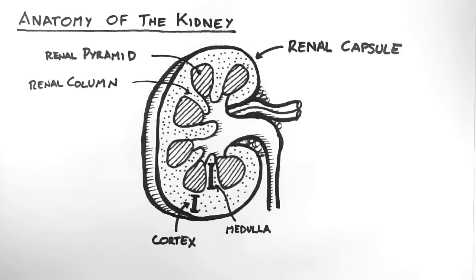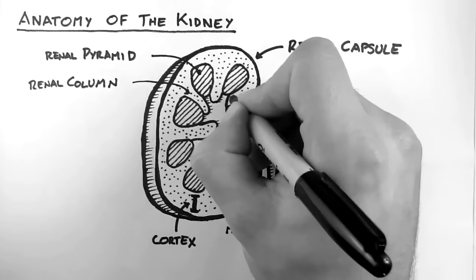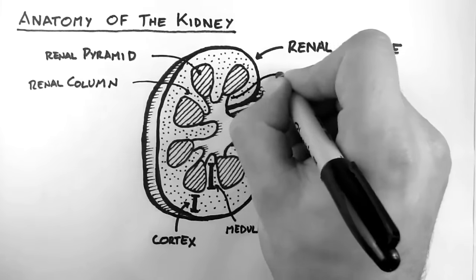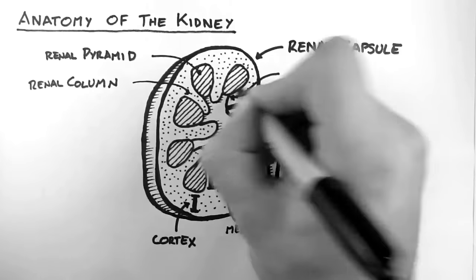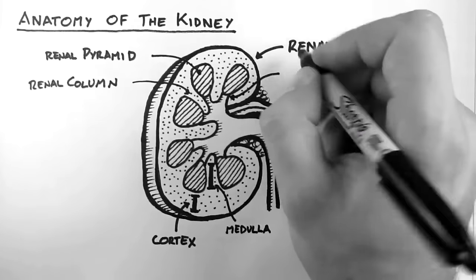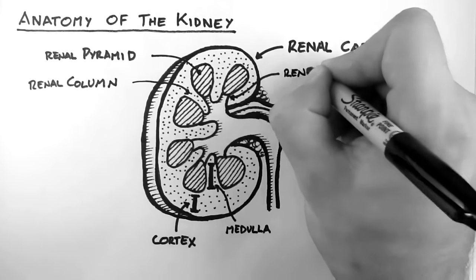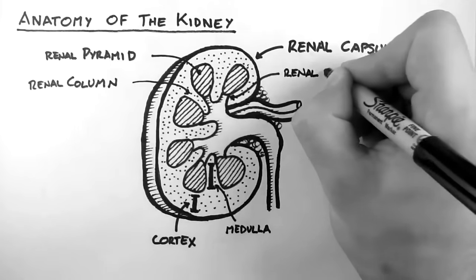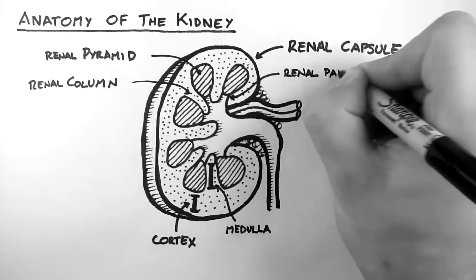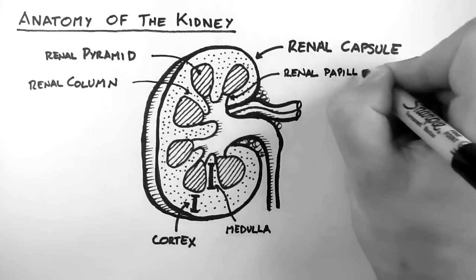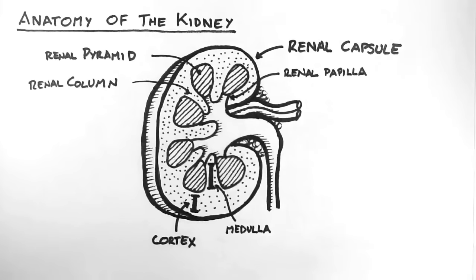The urine is carried in small tubules called collecting ducts, which run down through the renal pyramids, and then through the renal papilla, which is where the pyramids meet the minor calyces.